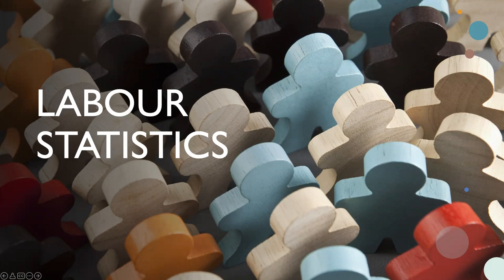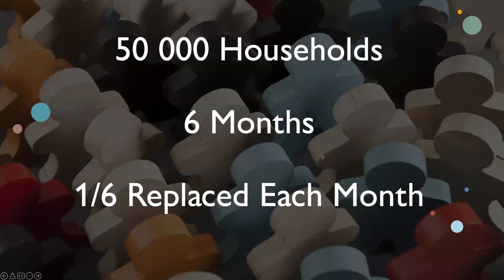Let's pause before moving forward to go over how this data is retrieved. The government will survey 50,000 households, with each household staying in the survey for six months, and each month one-sixth of the sample will be replaced.